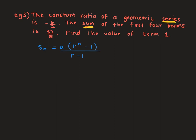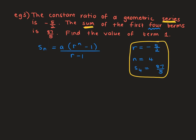They told us R is negative 5 over 2. The sum of the first four terms means n equals 4, and summing those four terms gives 87 over 5. We can now substitute these into the formula: S4 equals 87 over 5; A is what we're finding; the constant ratio is negative 5 over 2, raised to the power of 4 minus 1, over negative 5 over 2 minus 1.